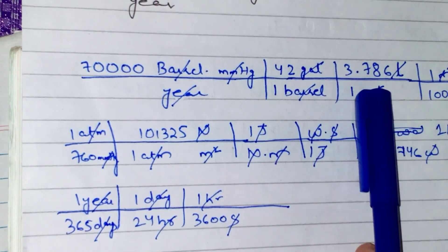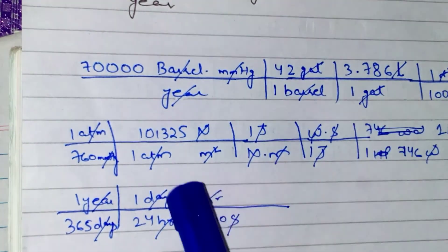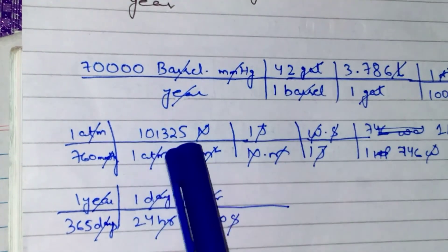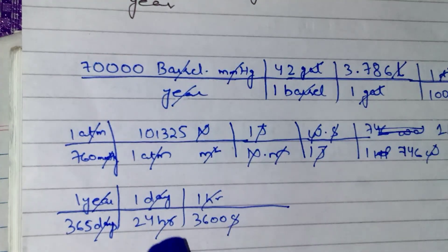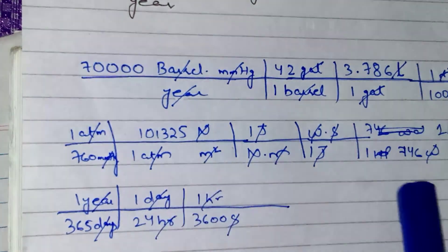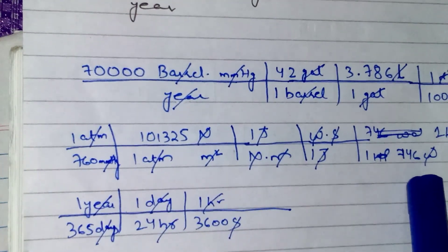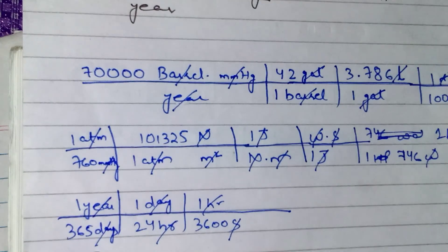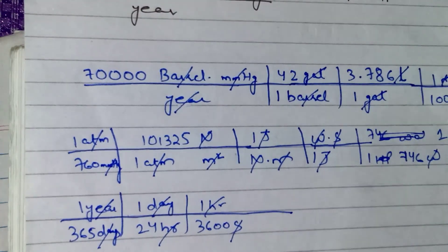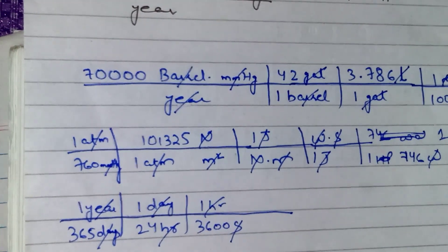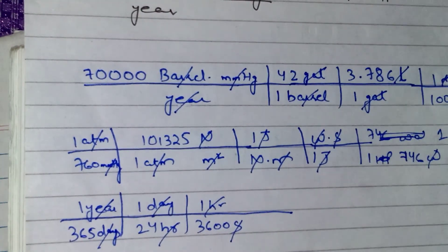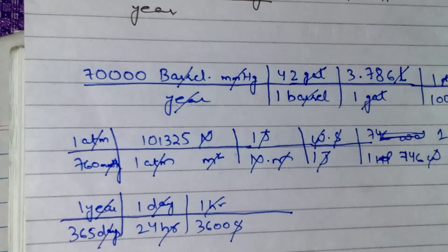Multiply all these: 7000 × 42 × 3.786 × 101,325 divided by 1000 × 760 × 746 × 365 × 24 × 3600. Do let me know the answer in the comment section. Don't forget to subscribe to the channel and share with your friends. If you have any query, you can ask me in the comment section.